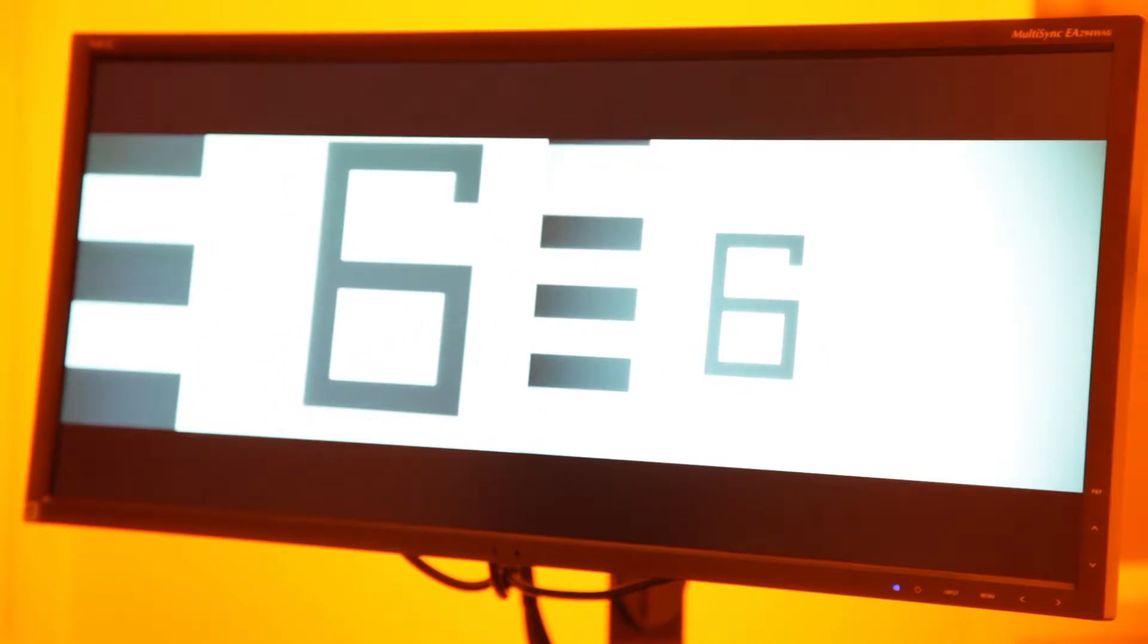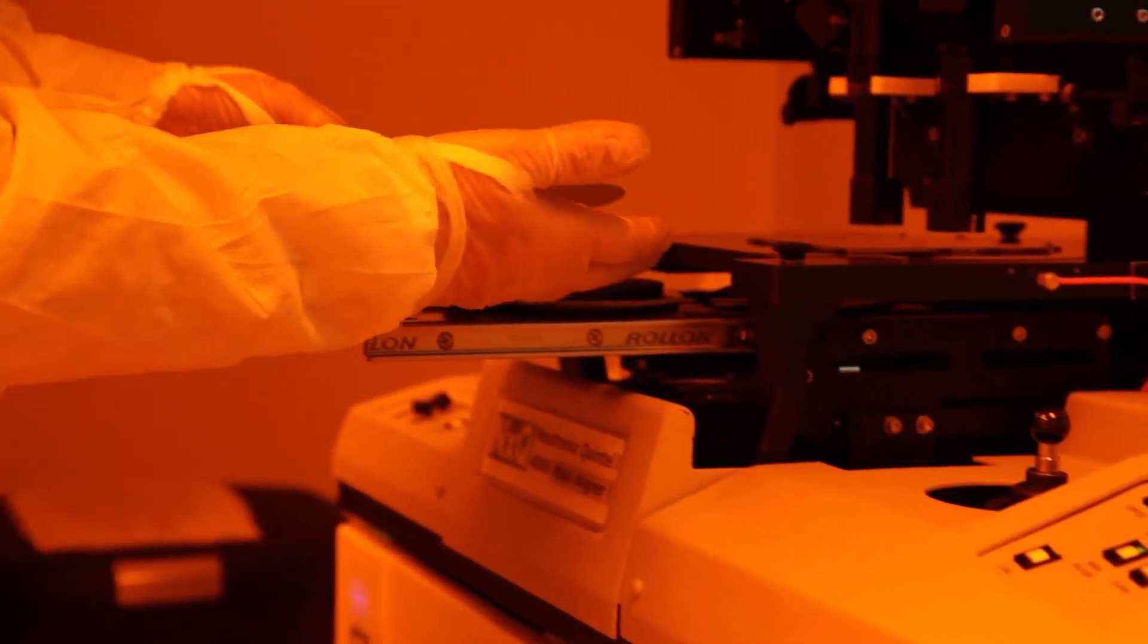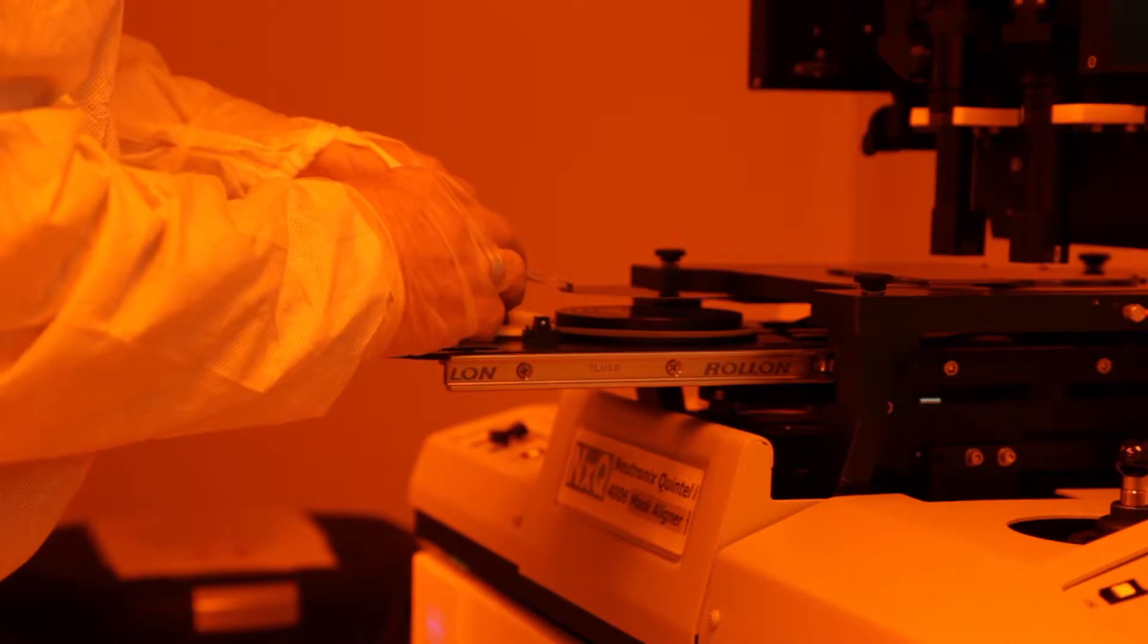The microscopes can move so that you can find known marks on your mask and make sure they are aligned by rotating it. A substrate, often a silicon wafer like this one, will already have photoresist on it, typically by spin coating.